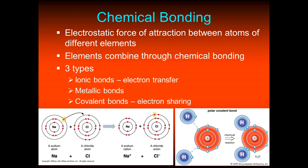Now let's talk about chemical bonding. A chemical bond is a force of attraction between different elements. There are three types: ionic bonds, where electrons are transferred — something loses electrons, something gains electrons; metallic bonds; and covalent bonds, where electrons are shared. The two main types are ionic and covalent.